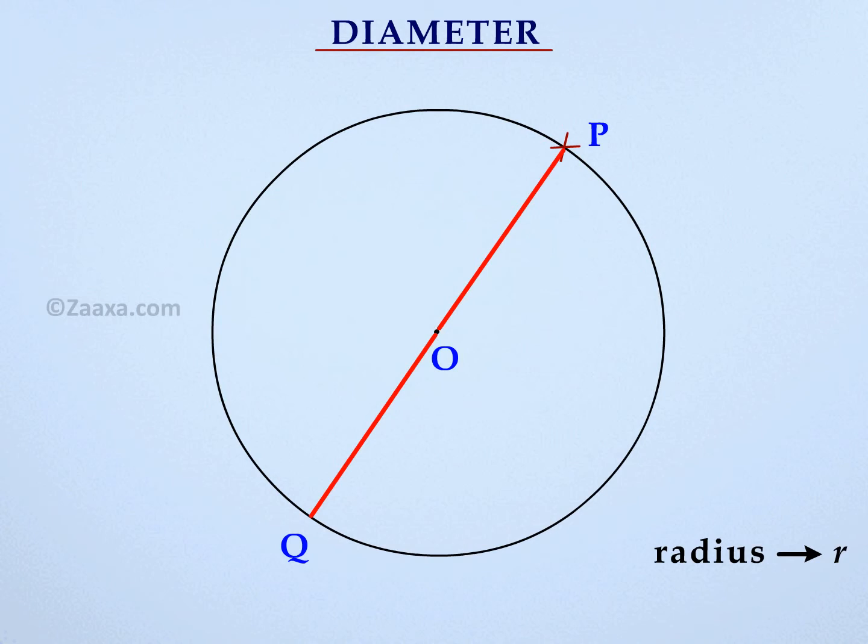Note that the diameter is a straight line which divides the circle into two equal halves and passes through its center. We usually denote the diameter by D.